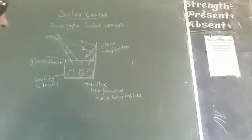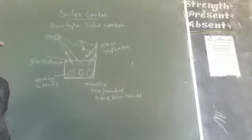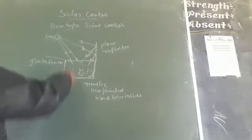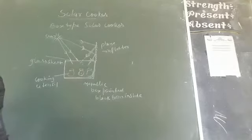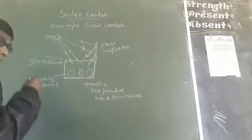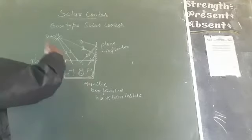In my previous class I explained the use of glass sheet cover. Glass sheet cover allows the hot radiation to enter the box but does not allow the hot rays to go out from the box.